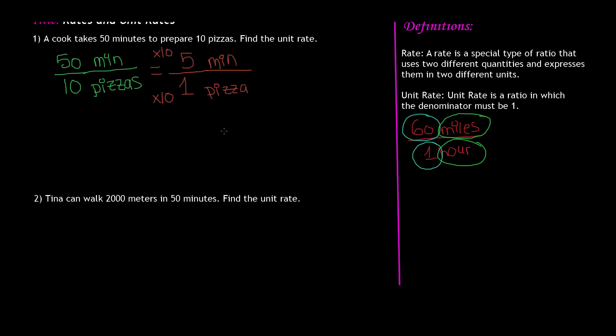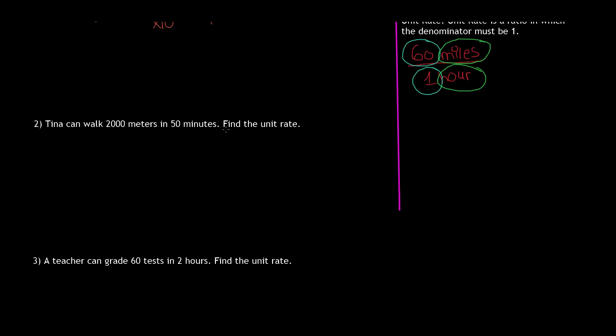So now we've done our first problem. Let's scroll down to our second one. It says, Tina can walk 2,000 meters in 50 minutes. Find the unit rate. Once again, the same thing. Our first step is to write this as a fraction. So we'll write 2,000 meters over 50 minutes. And this must be equal to a unit rate with a denominator of 1. So once again, 1 times 50 gave us 50.